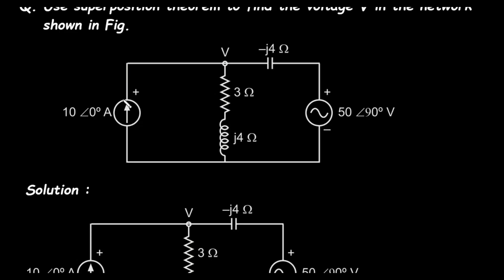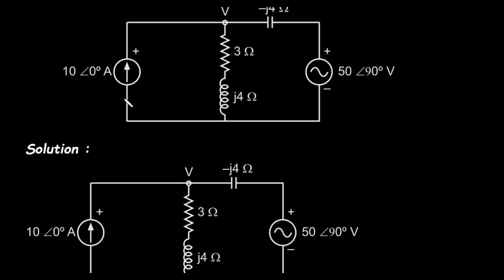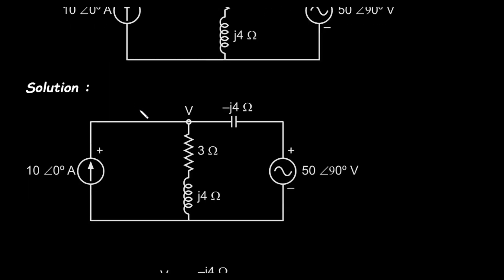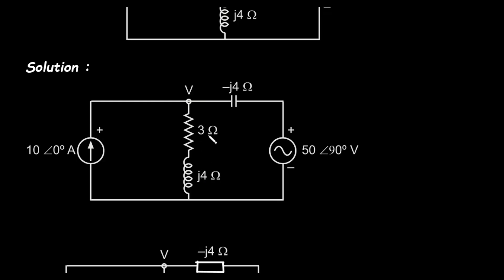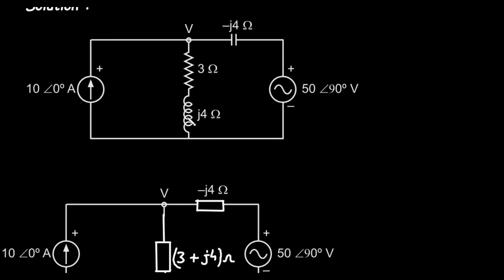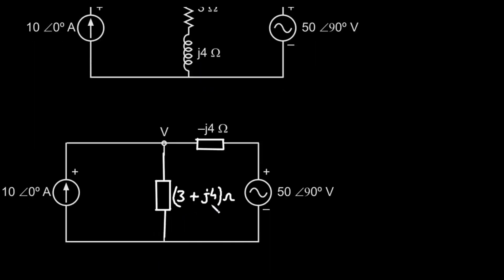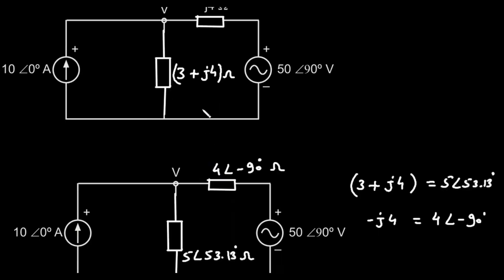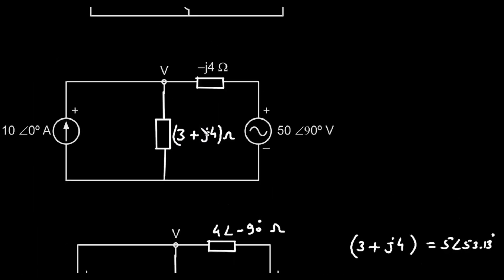Before we start, let's simplify the circuit a little. The 3-ohm resistor and the inductor with impedance J4-ohms are in series. We can combine them into a single complex impedance by adding them together. So that branch has a total impedance of 3 plus J4-ohms. Now, let's convert our impedances from rectangular form to polar form, as this will make multiplication and division much easier later on.